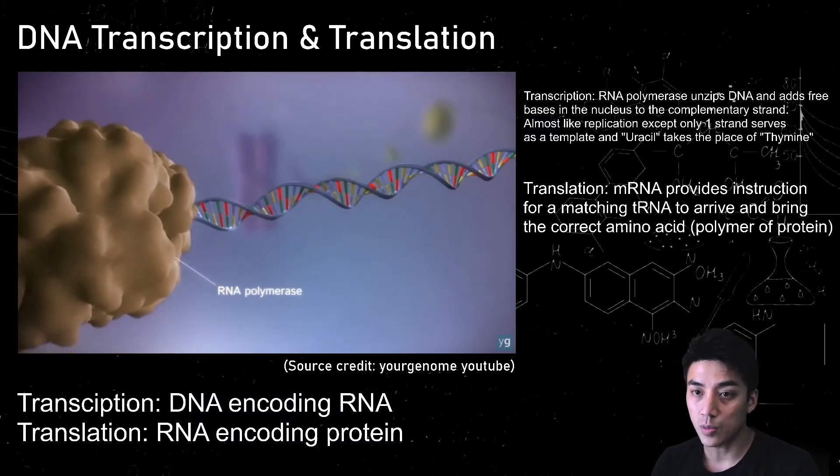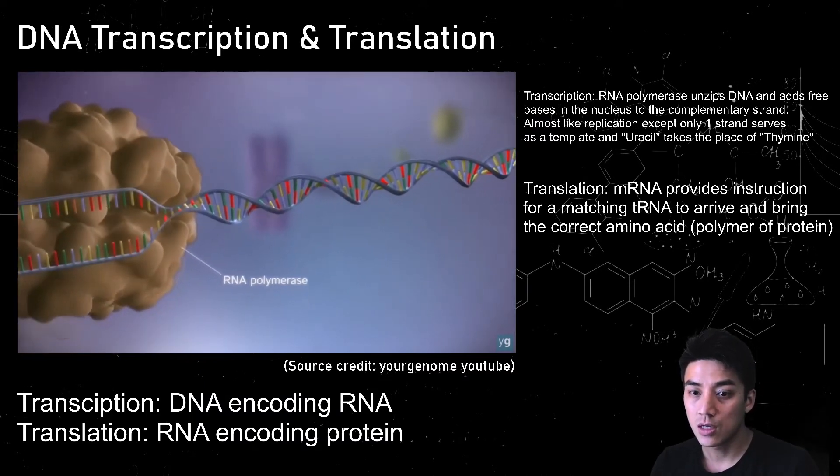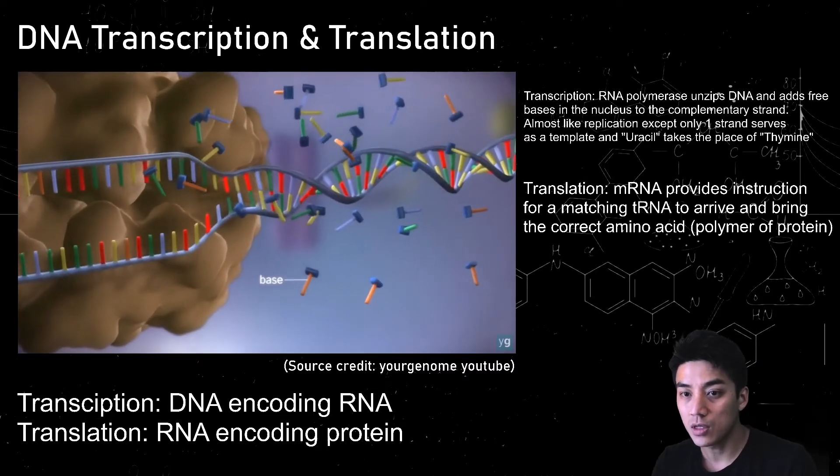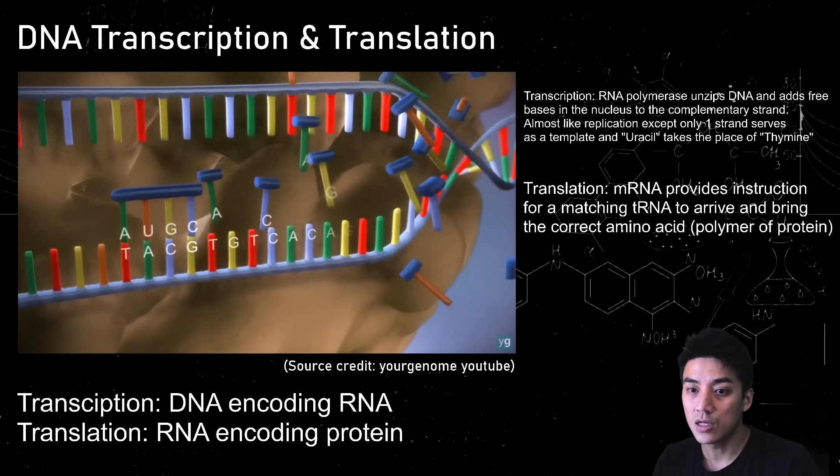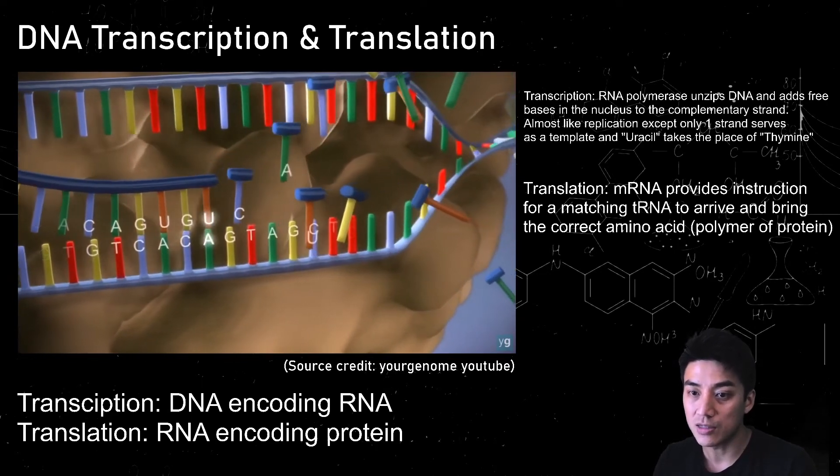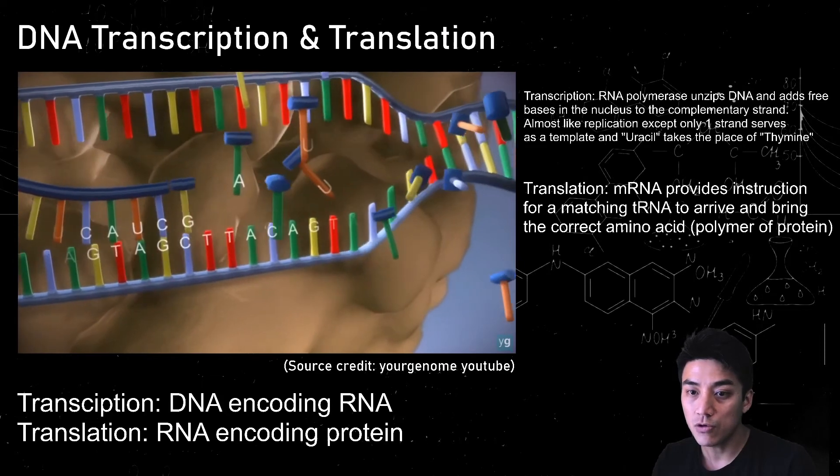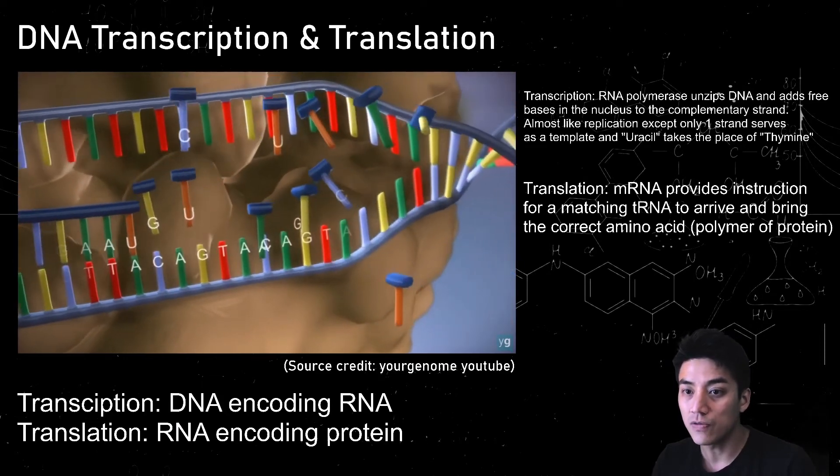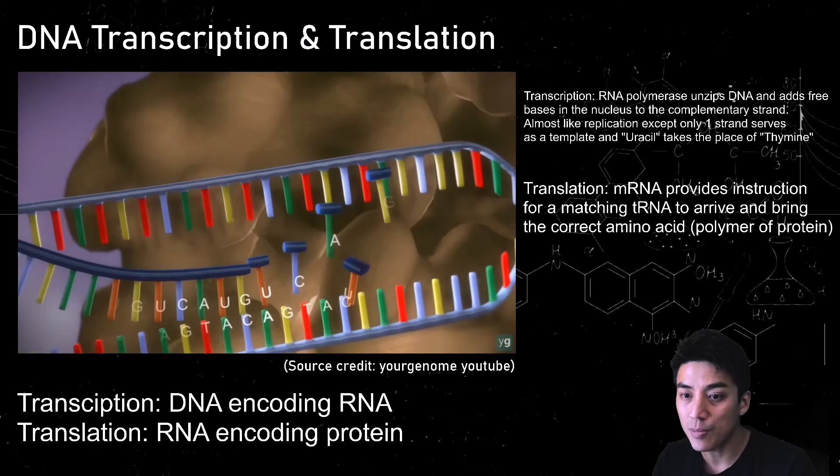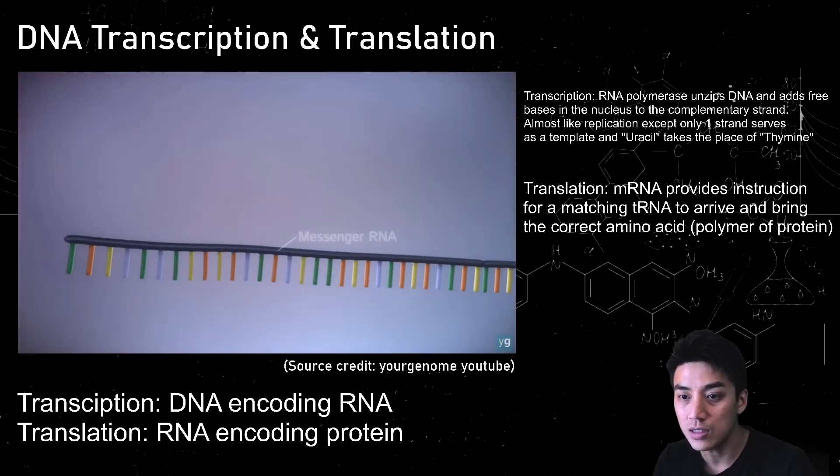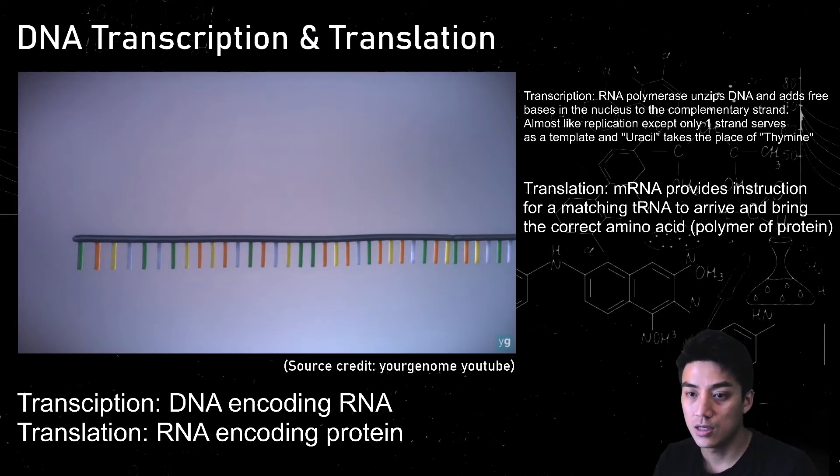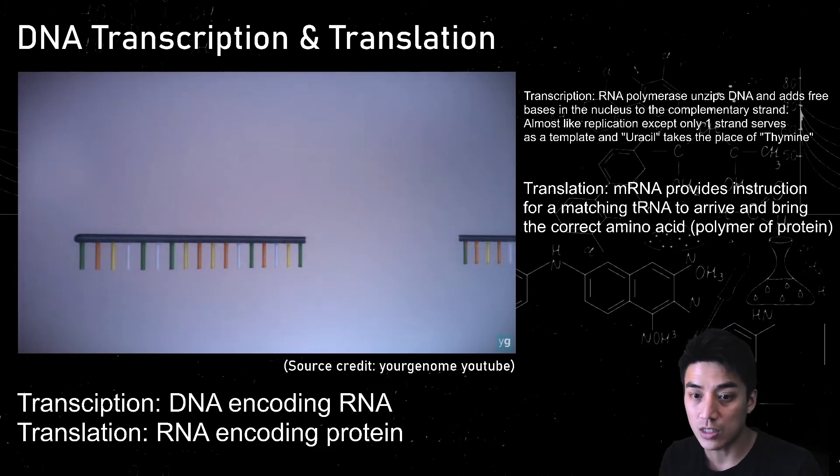So this is the process of transcription. It's almost like replication except instead of helicase, you have RNA polymerase which unzips everything. And it's going to introduce the complementary bases. So you can see how it's tacking on. But instead of creating copies of itself, it only makes one strand. And this strand is known as mRNA, which comes off. And the only big difference is instead of thymine coming in, it uses uracil instead. So this is our strand of messenger RNA, and it came from the DNA template. So that's known as transcription.